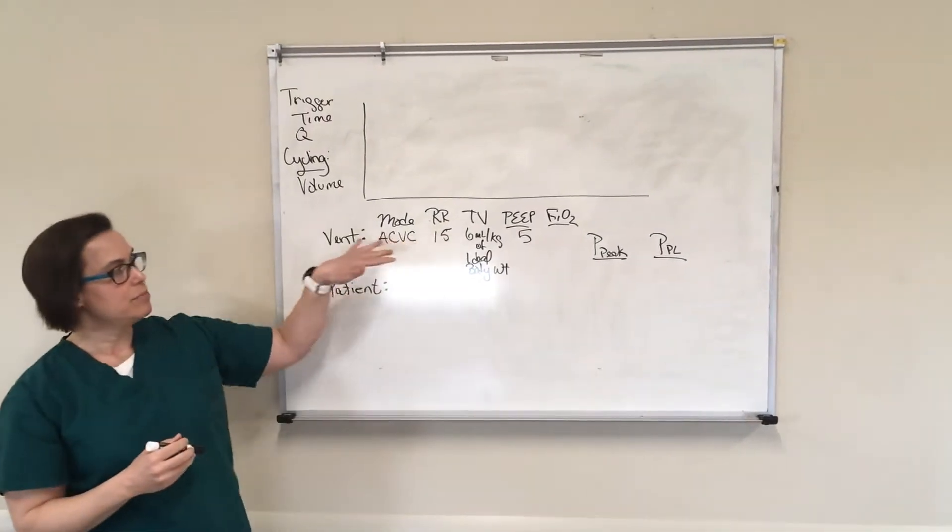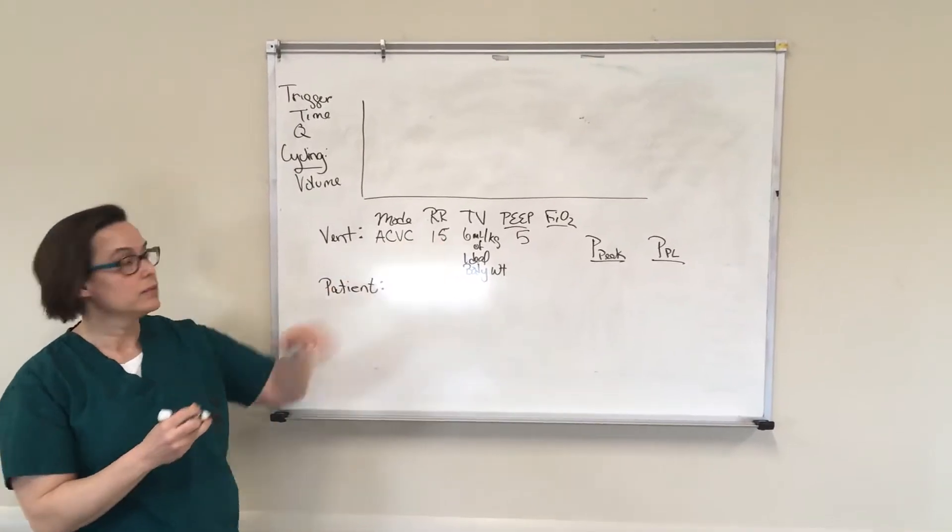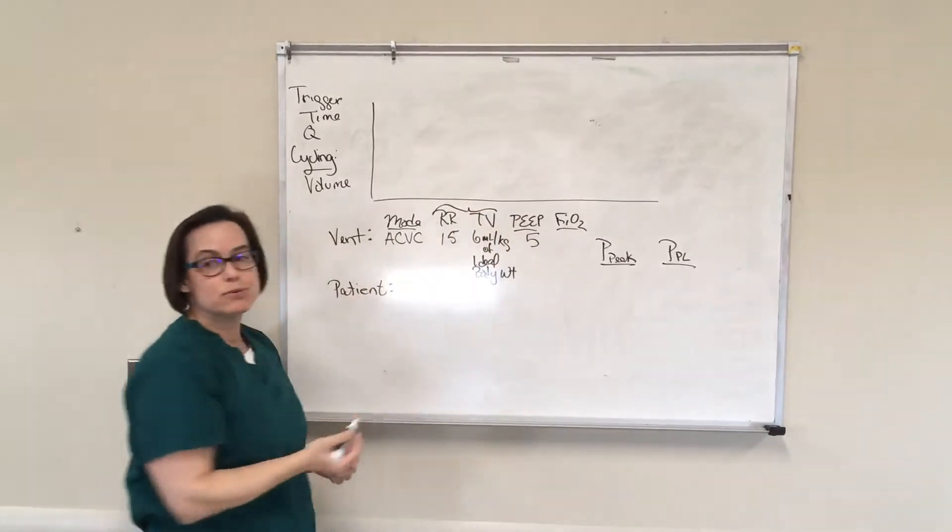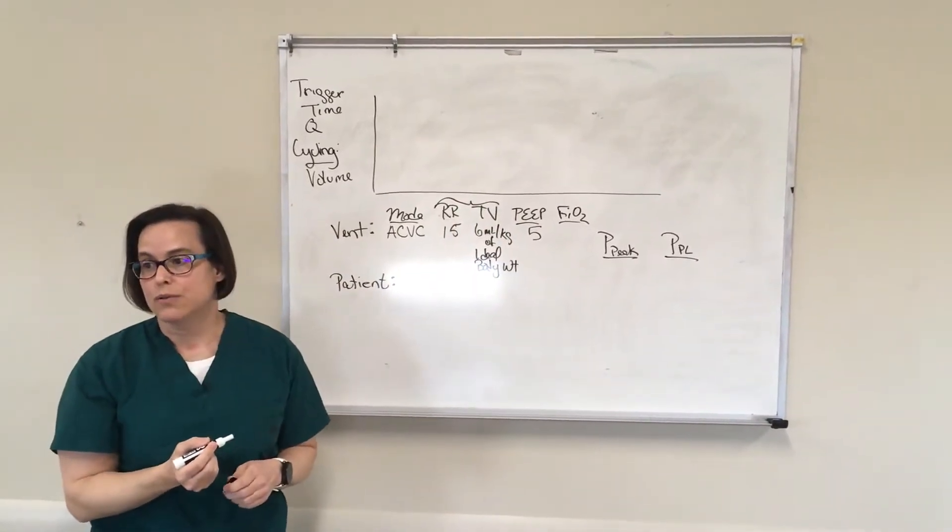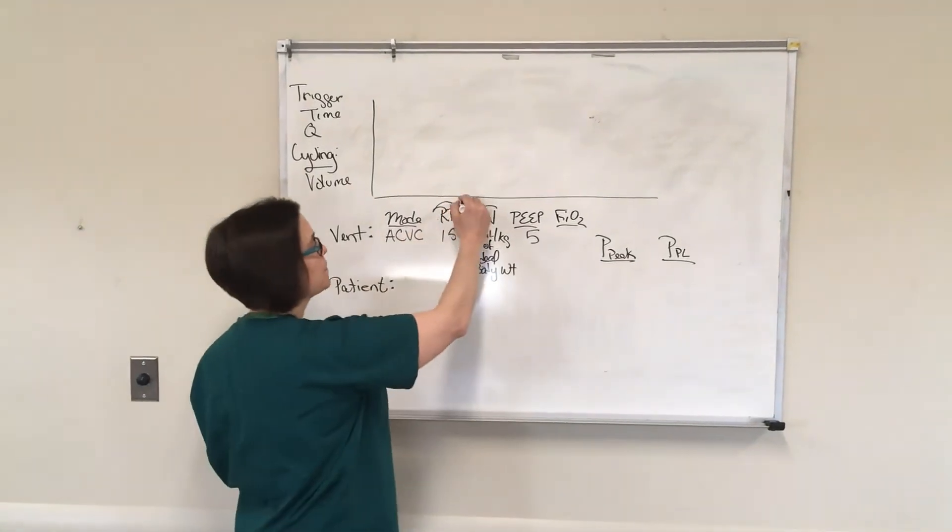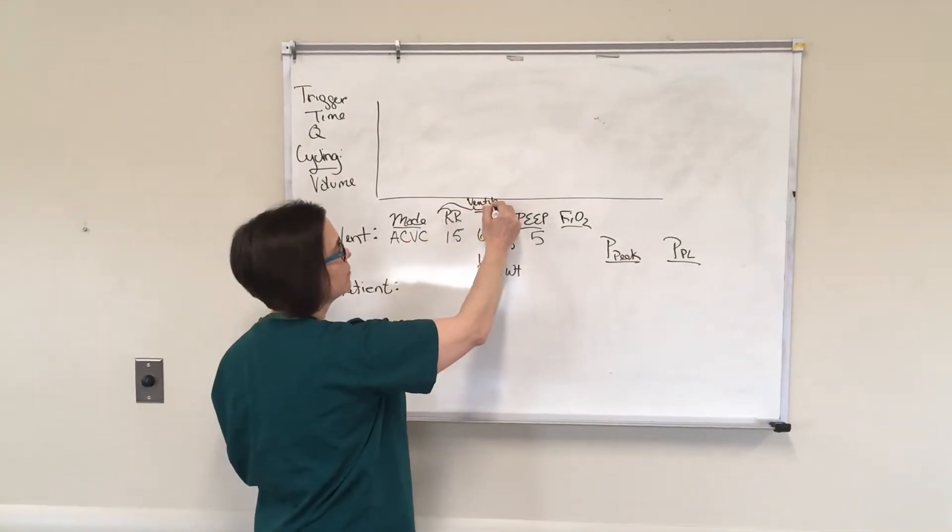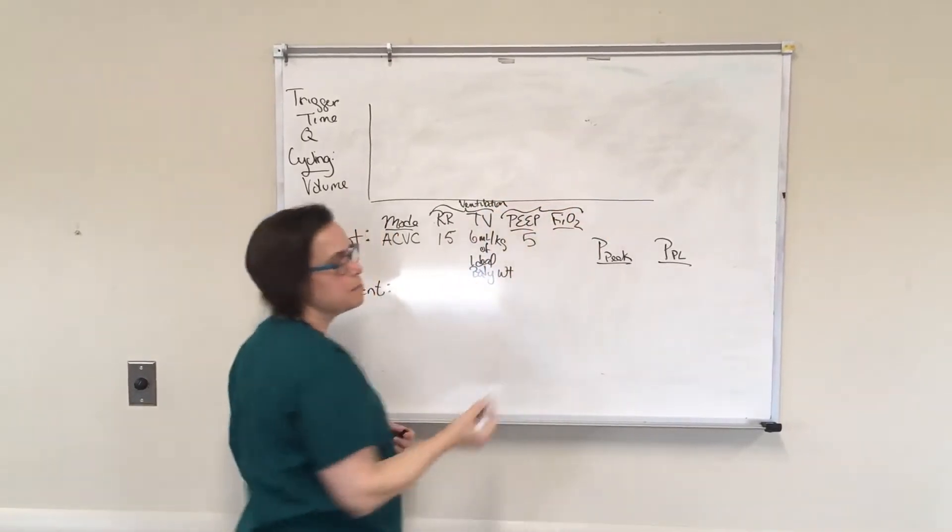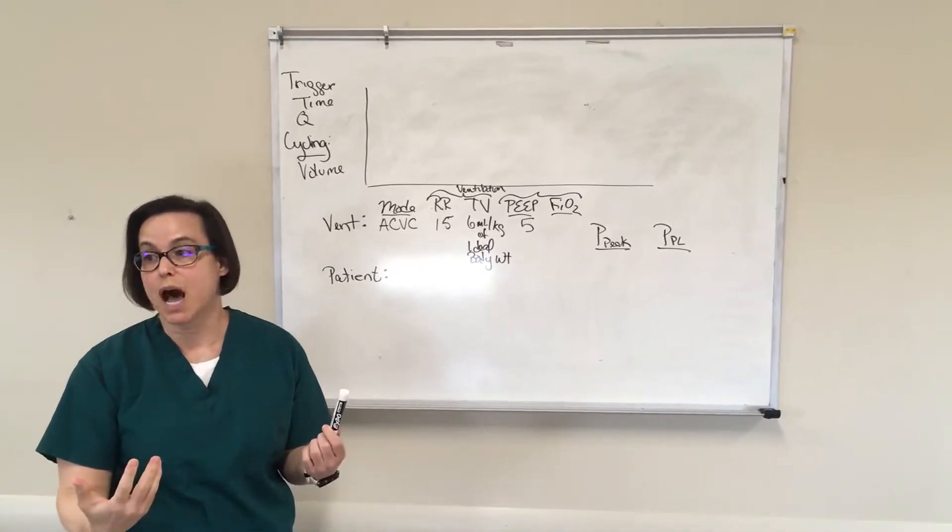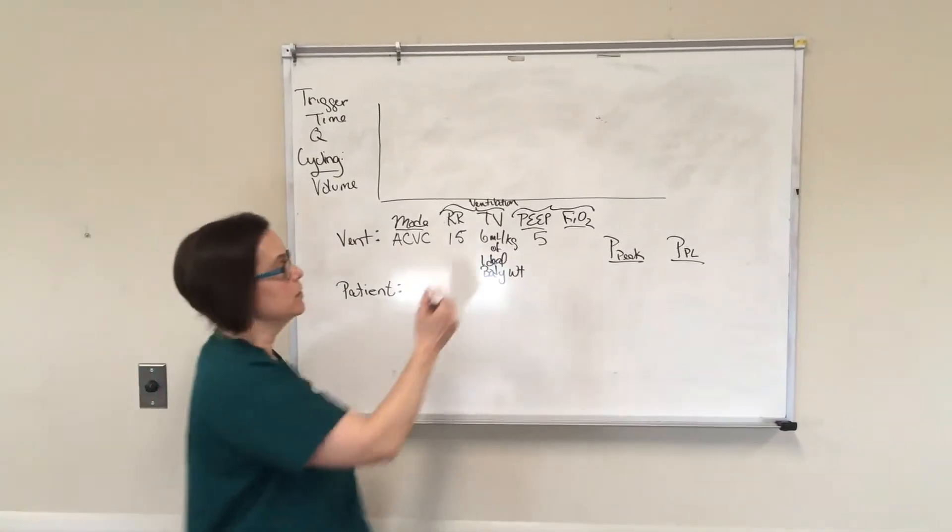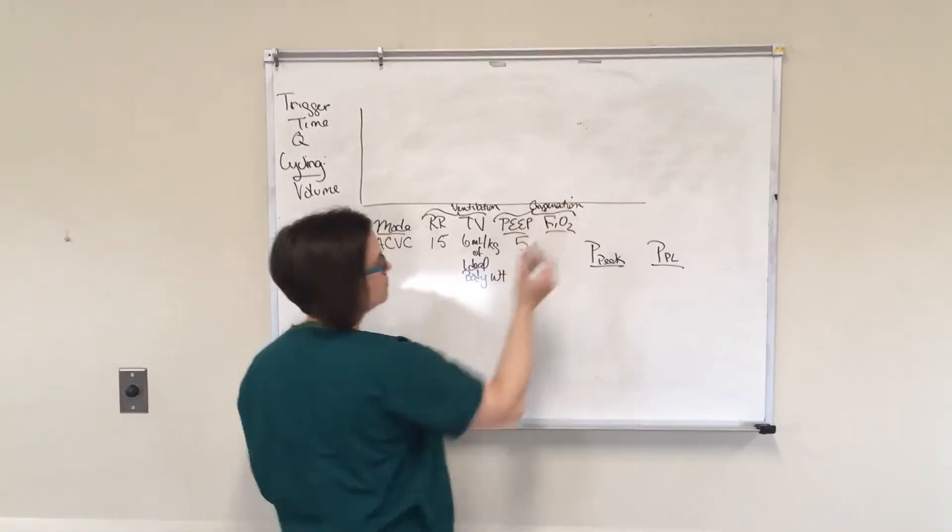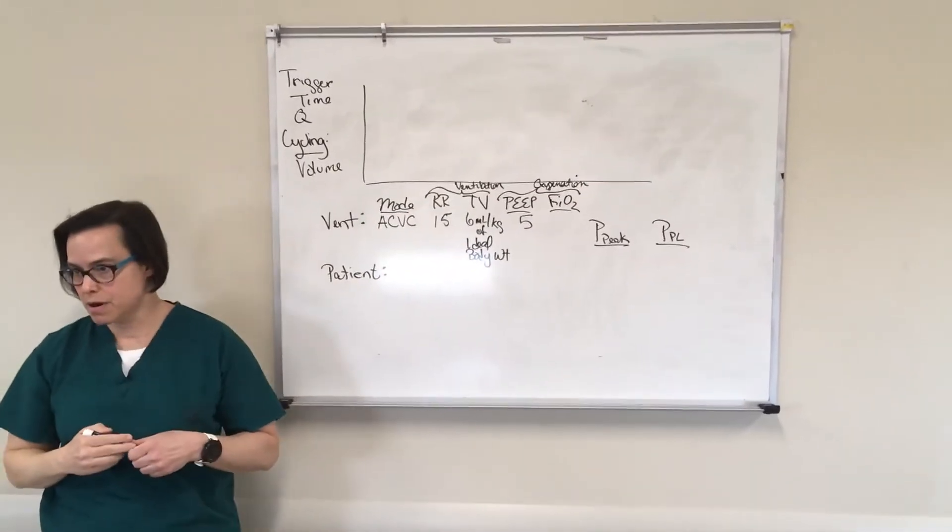The reason that I put these in this order as you're looking at them is the mode is always going to be your first thing, but the respiratory rate and the tidal volume are the two things that we can manipulate to affect how well a patient is ventilating. And then the PEEP and the FIO2 are the two things that we can affect to change how well a patient is oxygenating on this particular mode.